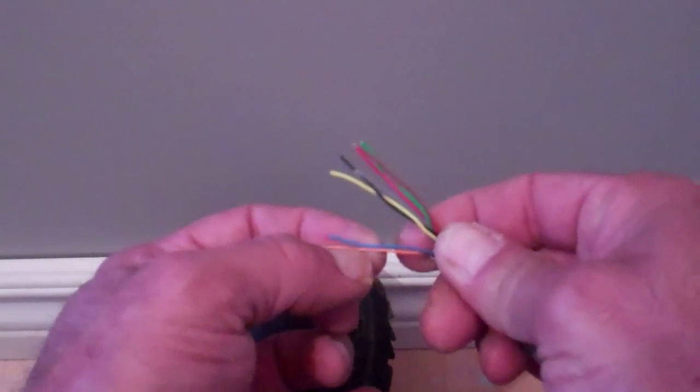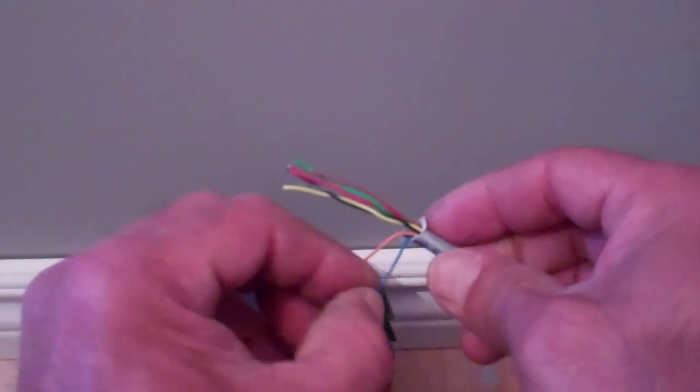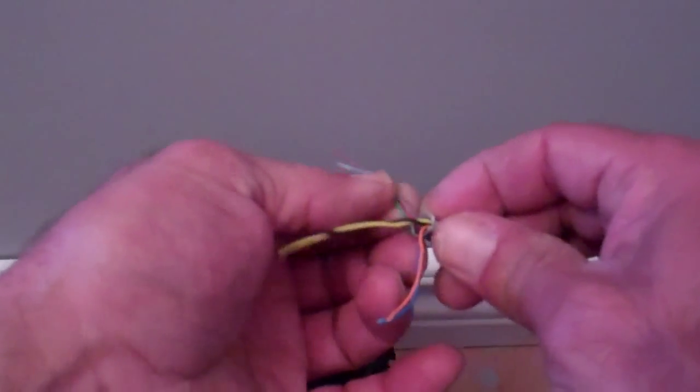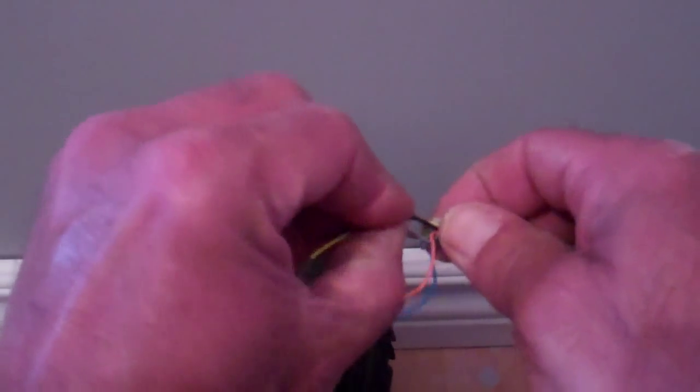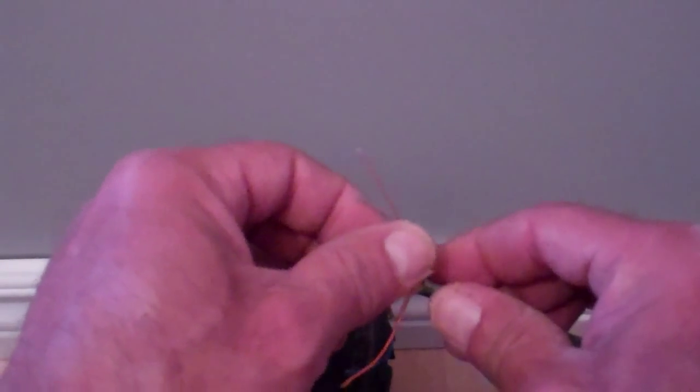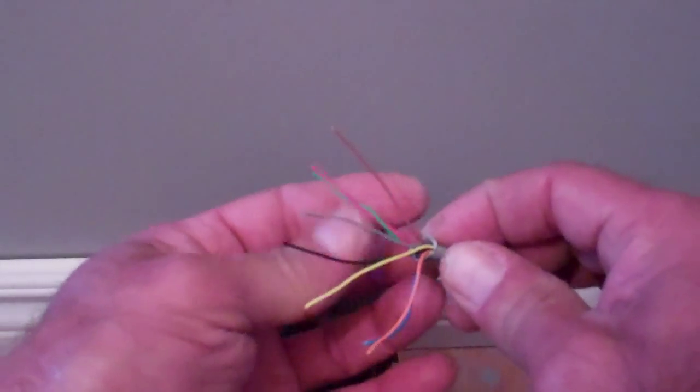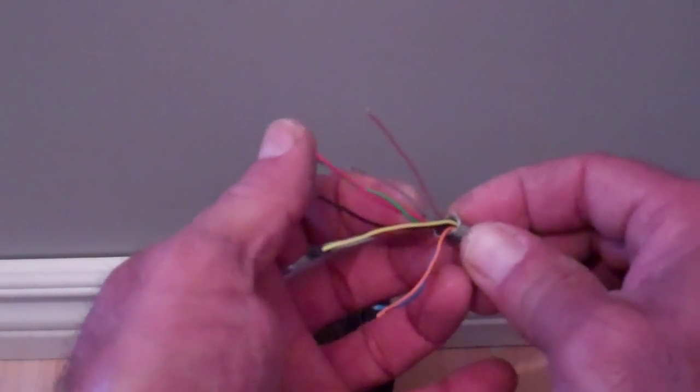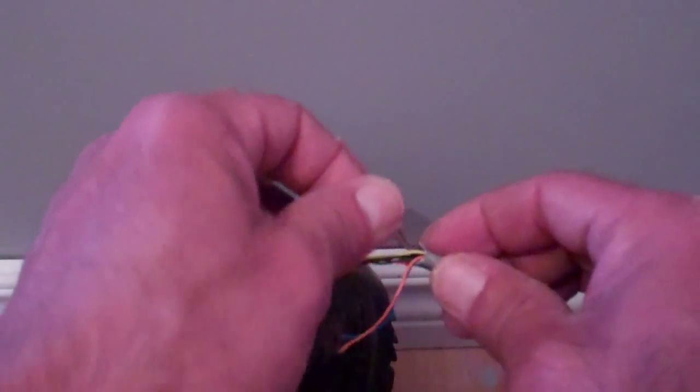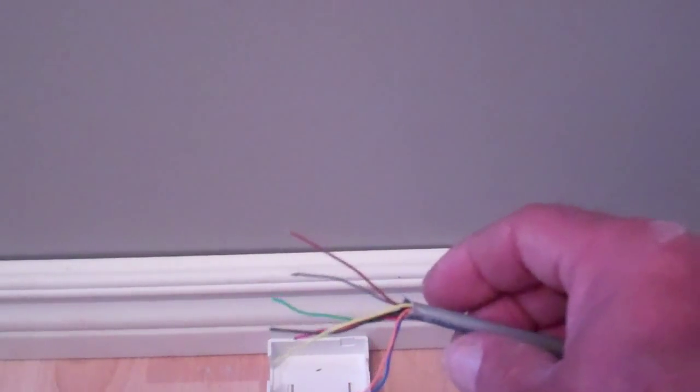Then we want to take all our pairs and separate them. This is not particularly good Cat 5 cable. Generally there's lots of twists in it. This is older stuff, not particularly good quality.